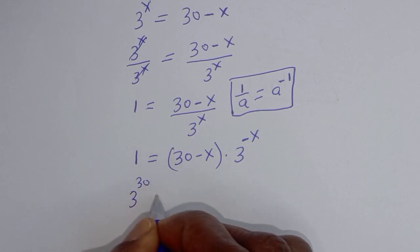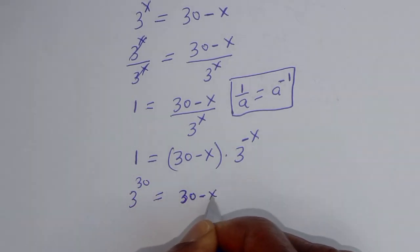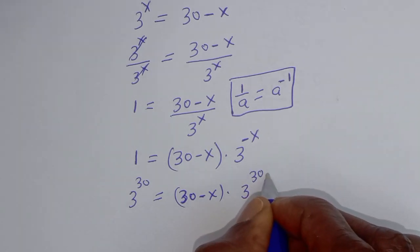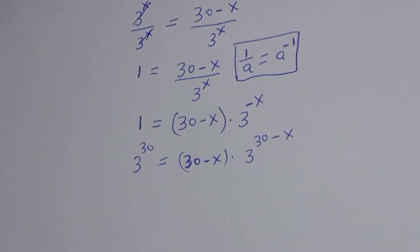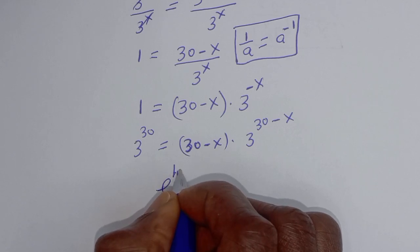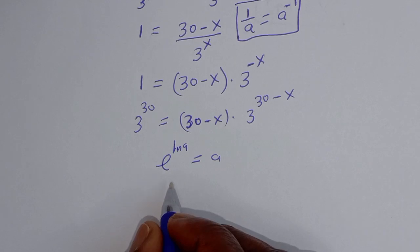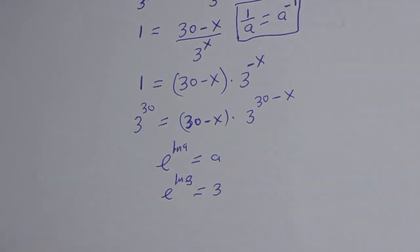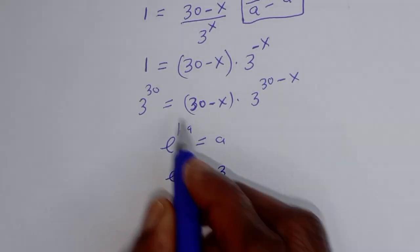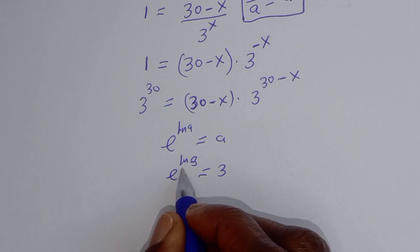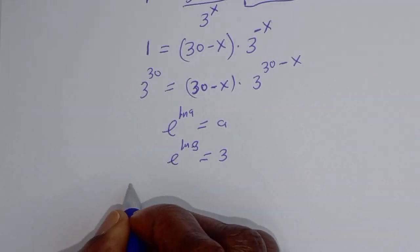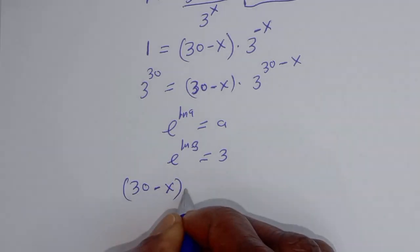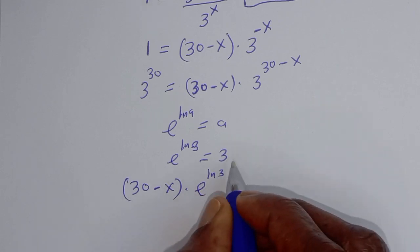That gives 3 raised to power 30 is equal to 30 minus s. Now take note that e to the power of ln of a is equal to a, and e to the power of ln of 3 is equal to 3. Therefore, substituting, this becomes 30 minus s multiplied by exponential ln of 3, raised to the power of 30 minus s.